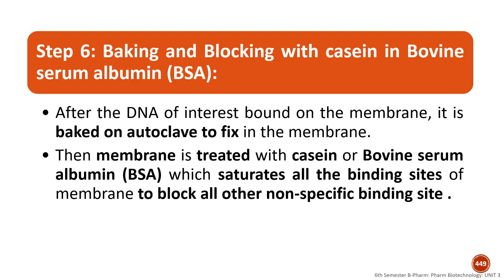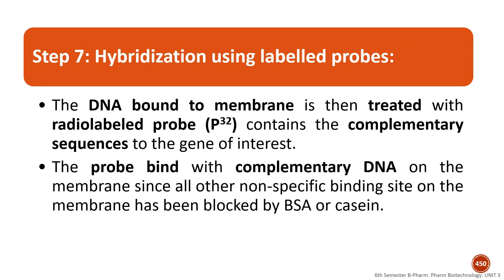The seventh step is hybridization using a labeled probe. The probe used is a phosphorus-32 radiolabeled probe consisting of single-stranded complementary sequences. The probe hybridizes to the complementary DNA sequence on the membrane, forming a double-stranded hybrid. This is the hybridization step using the labeled probe.